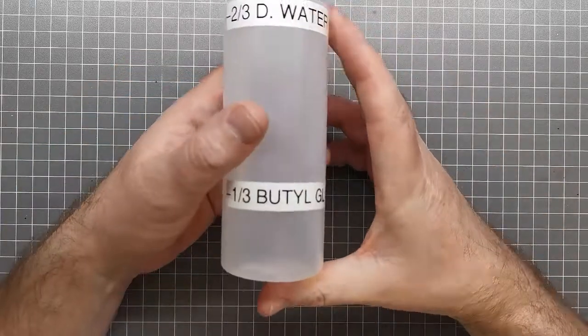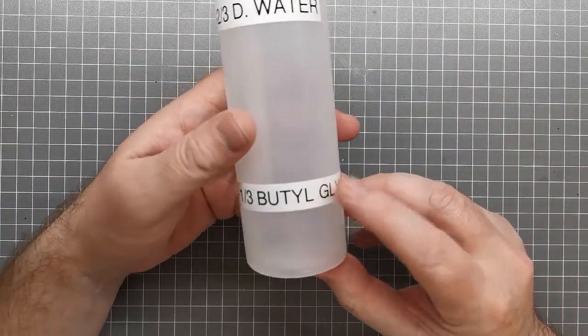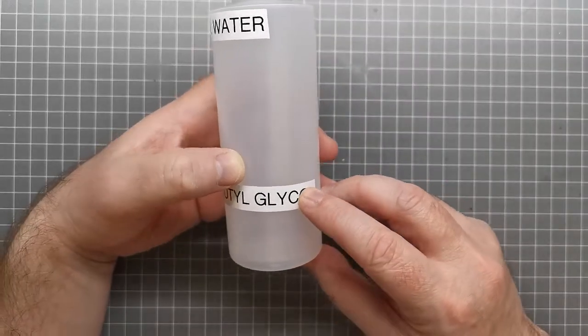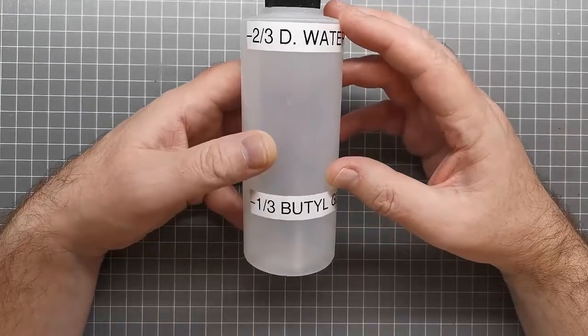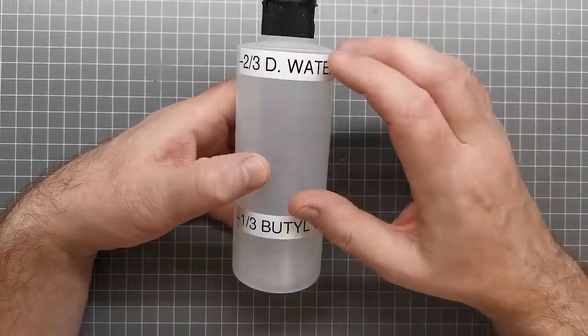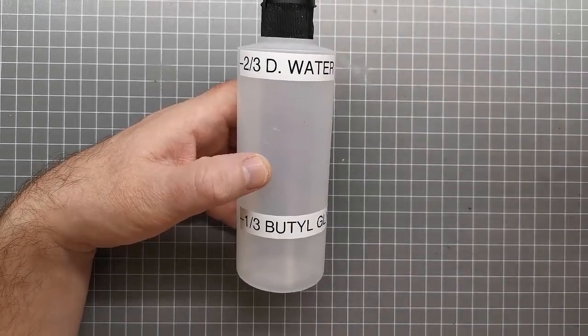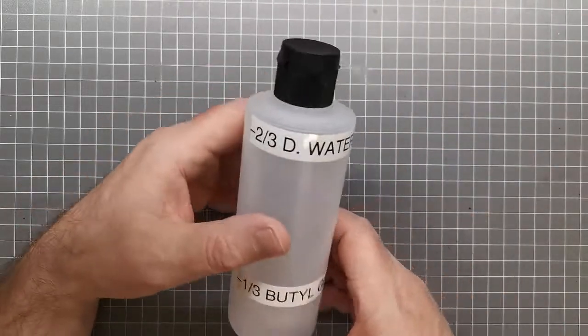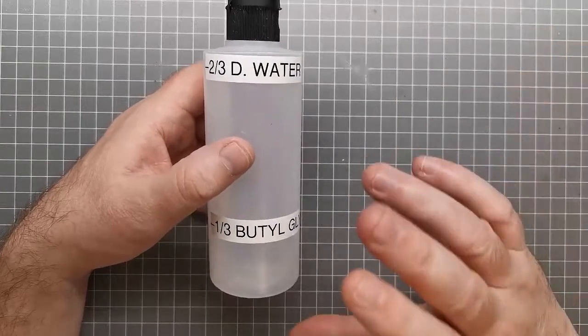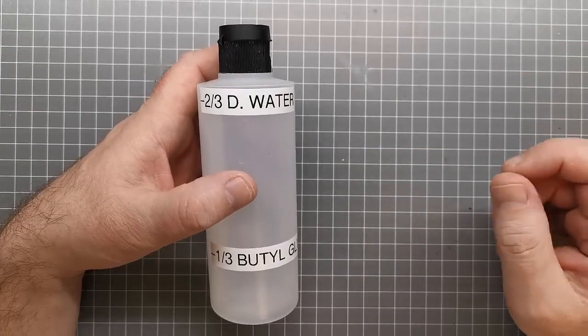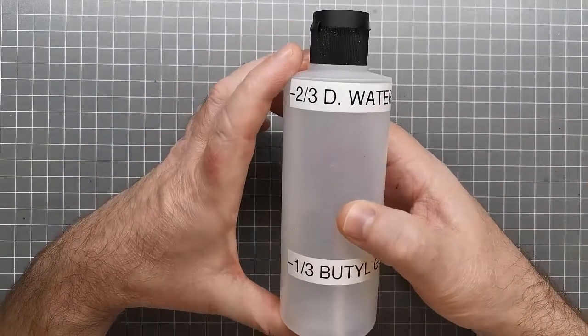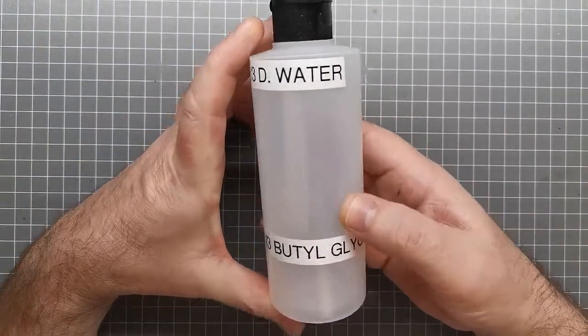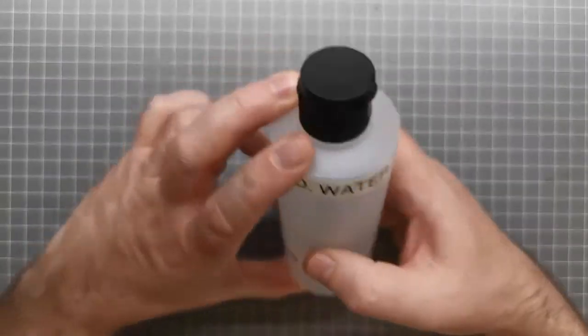What I do is take about a third of the butyl glycol ether and top it up with about two-thirds water, so it's a two-to-one ratio. Most of it's water, which is great because that's the cheapest ingredient. I know some people add maybe a bit of glycerin as a lubricant for the airbrush, but I found I don't need to do that.